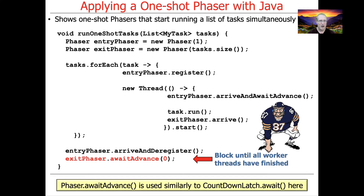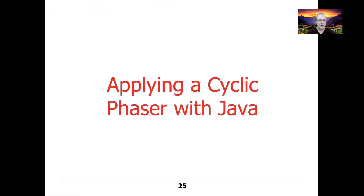So we're using it as an exit barrier. After all the threads are done, the calling thread itself can go ahead and return. That's the end of the overview of the one-shot example, which demonstrated using phasers in both an entry barrier and an exit barrier manner. Let's now turn our attention to another example that illustrates how to use cyclic phasers.